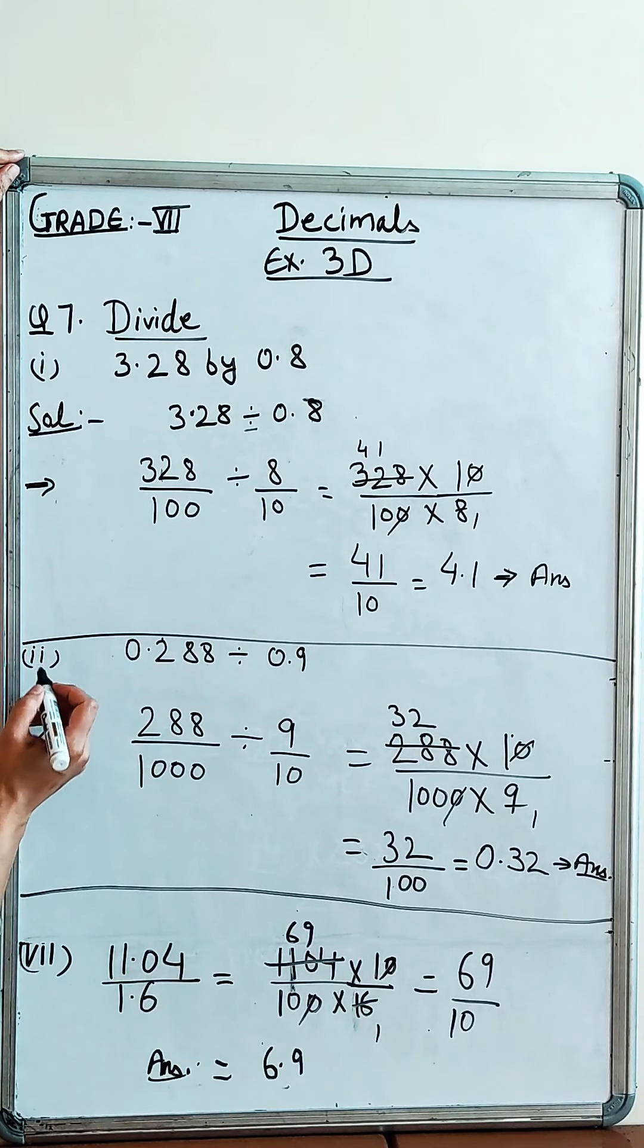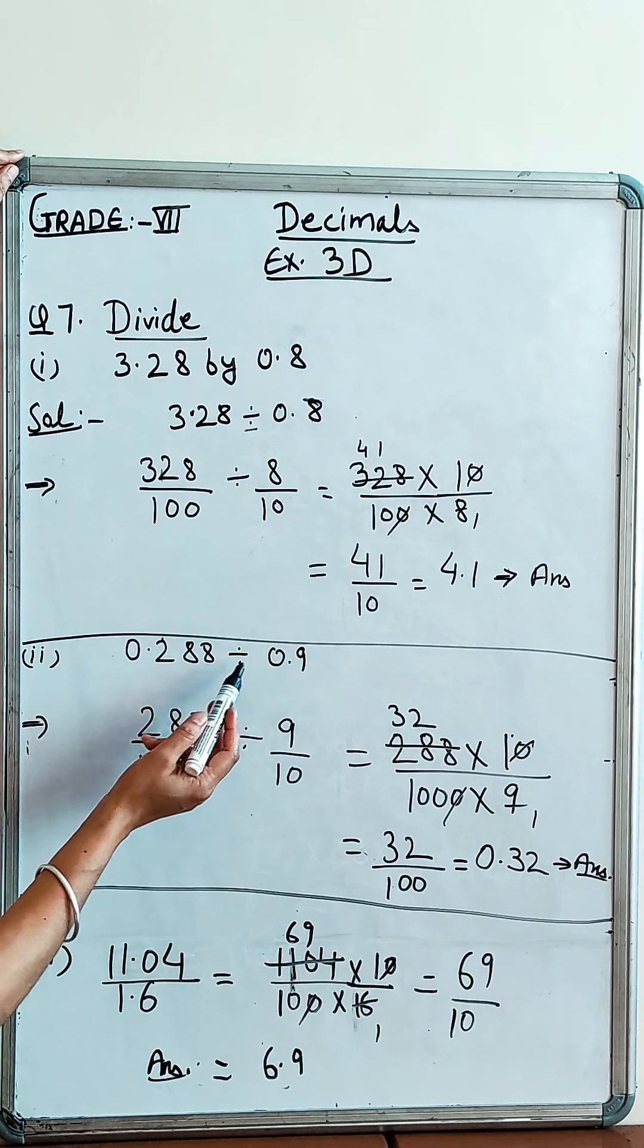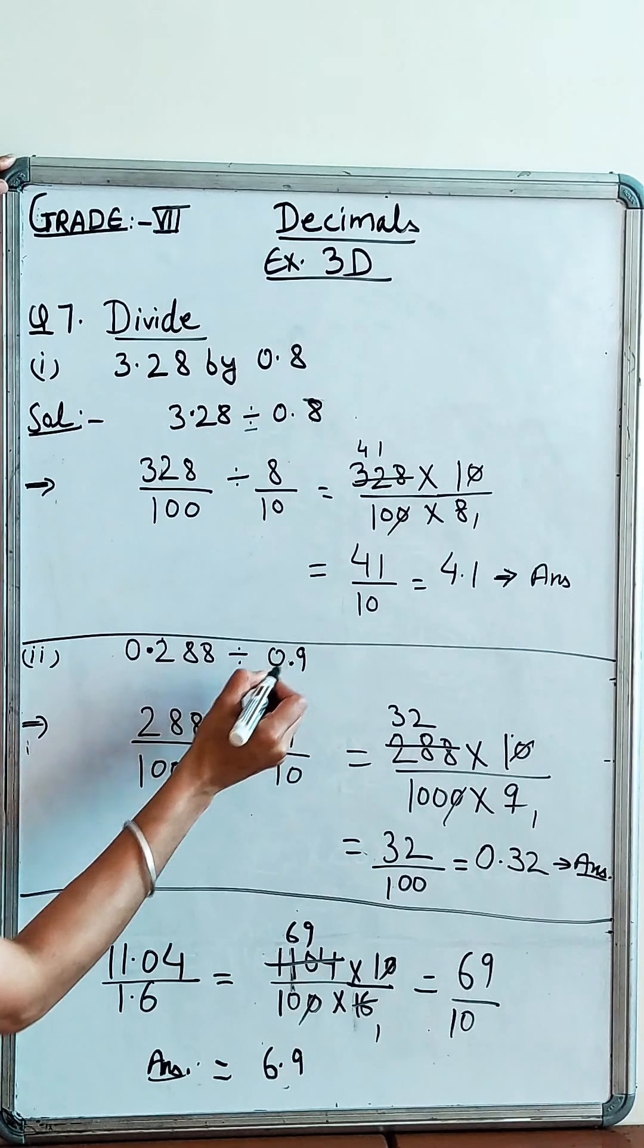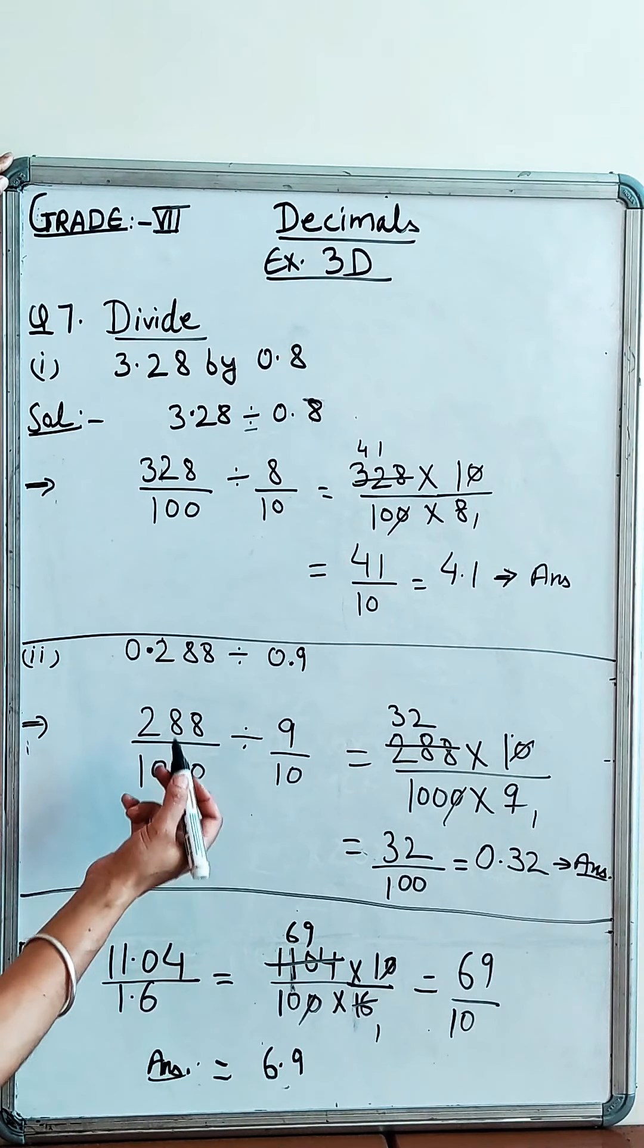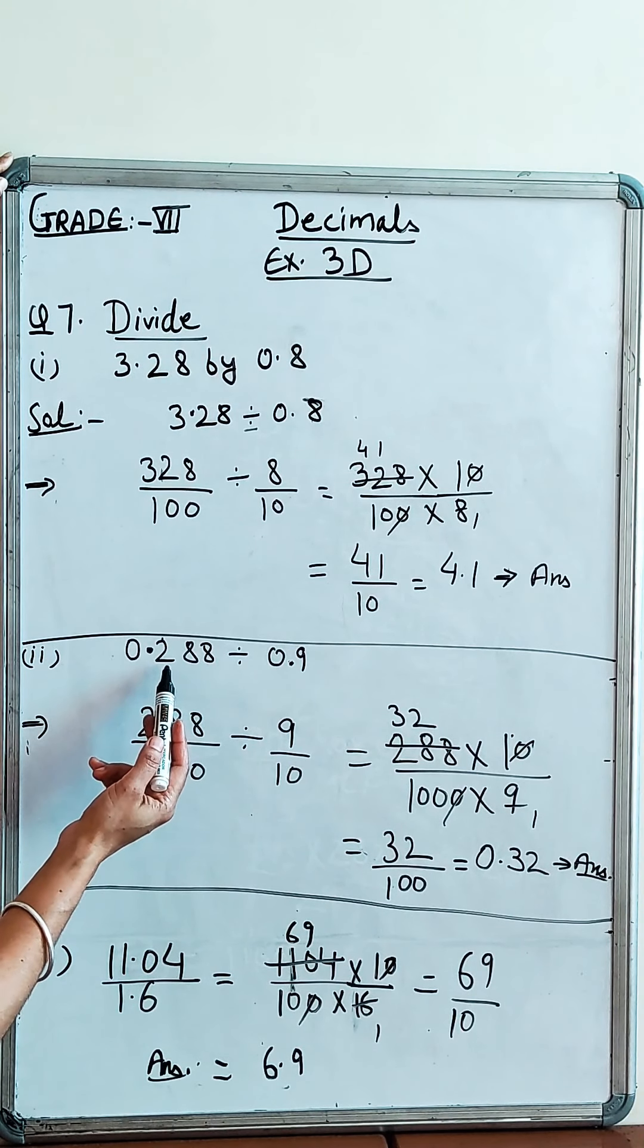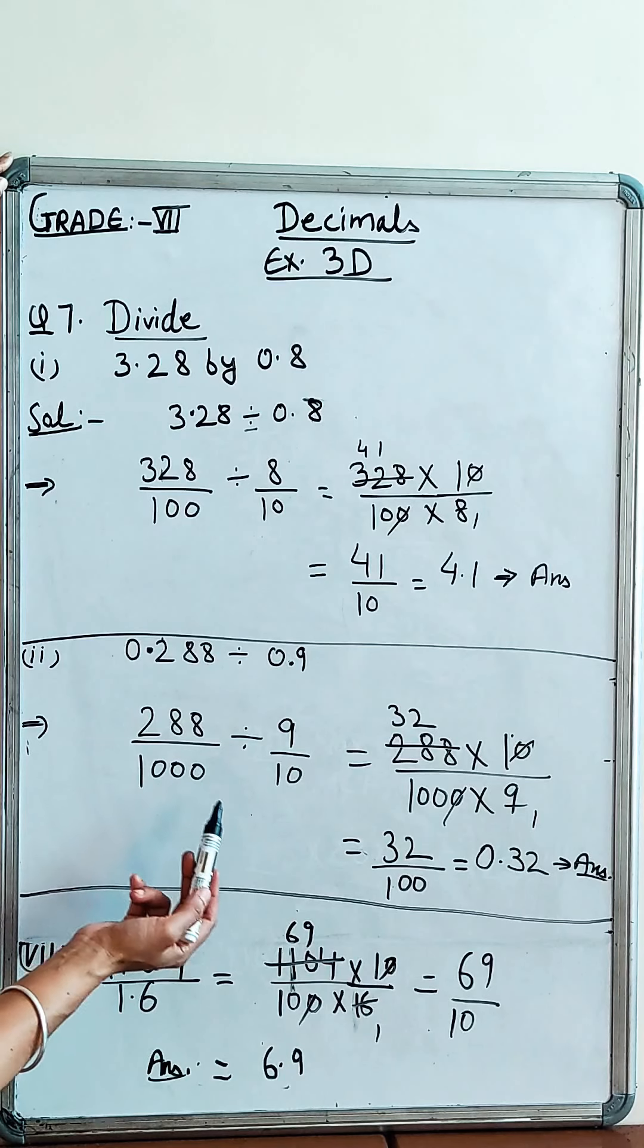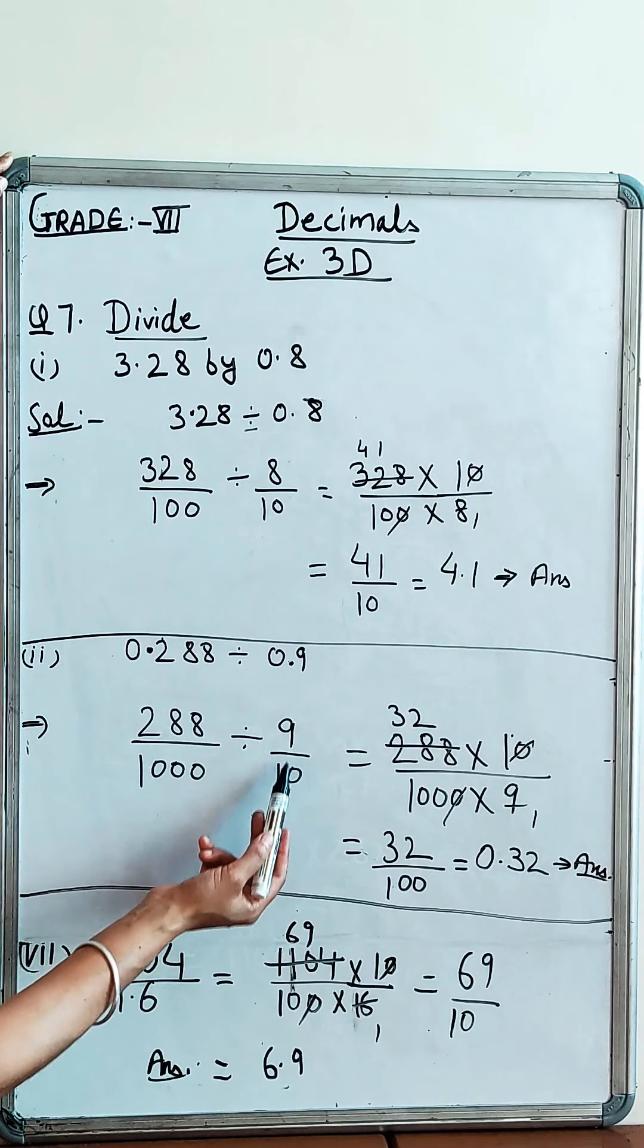Now, next question. This is part 2. 0.288 divided by 0.9. Now, these are the dividend and divisor with decimals. The same method - we cancel decimals. These are 288 over 1000, and this is 9 over 10.